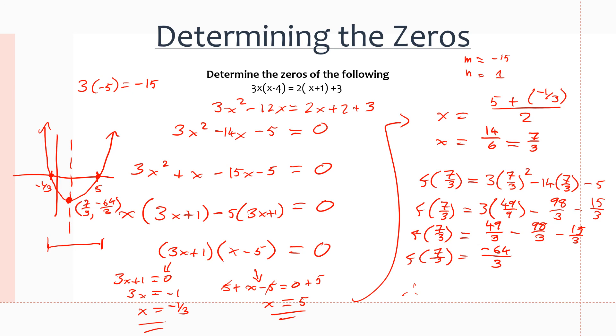Our equation has a minimum value of negative 64 over 3 at x equals 7 over 3.